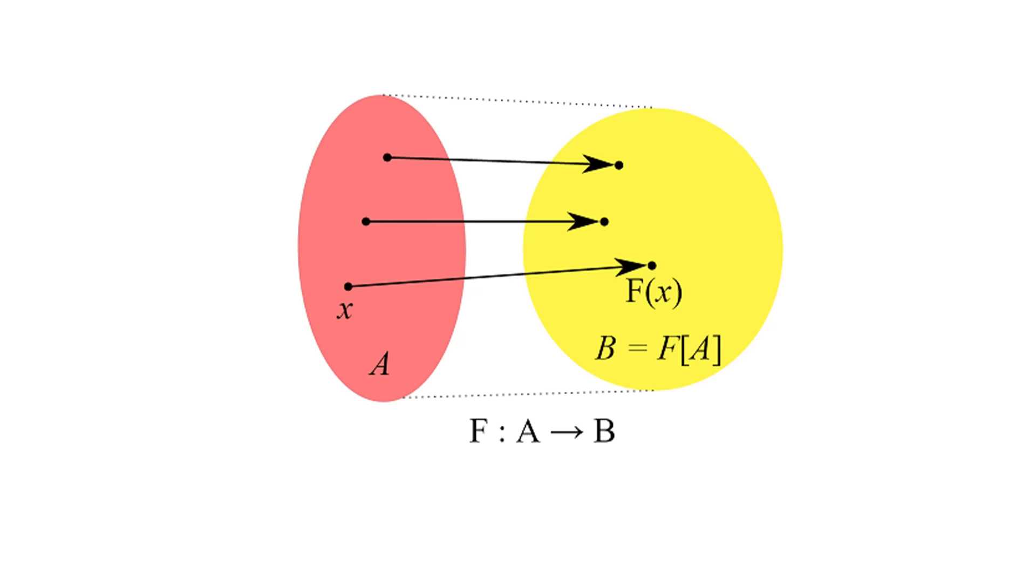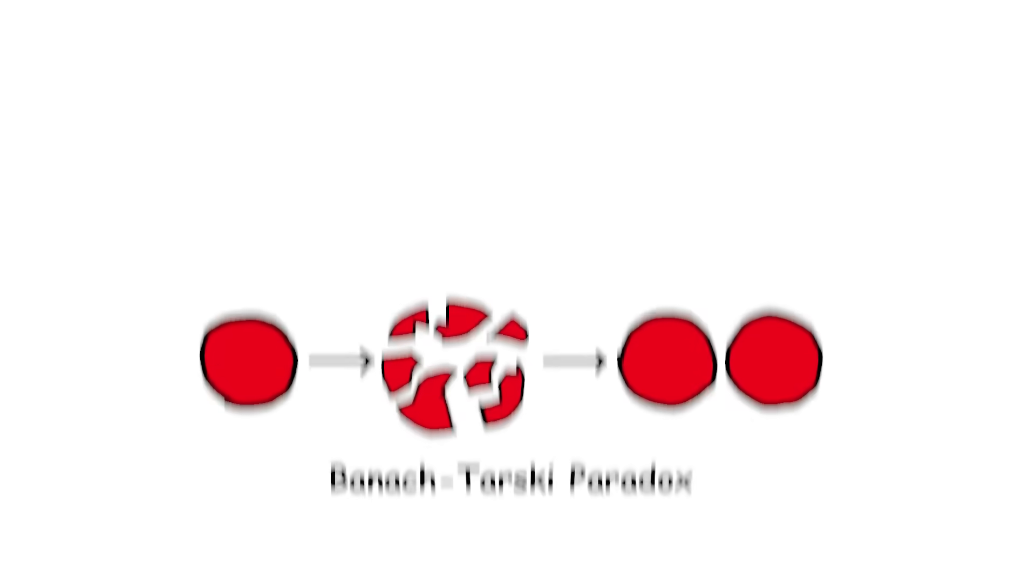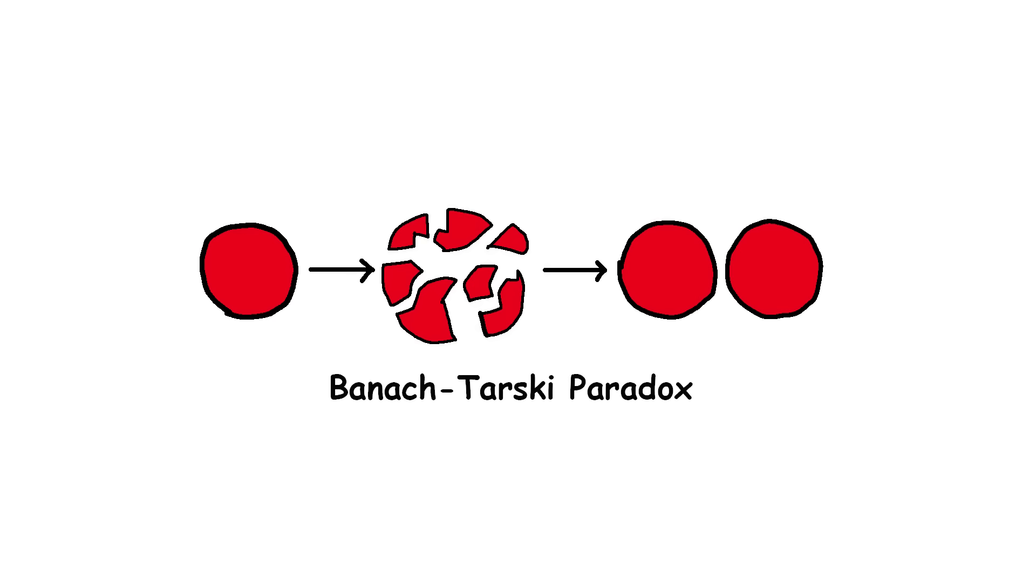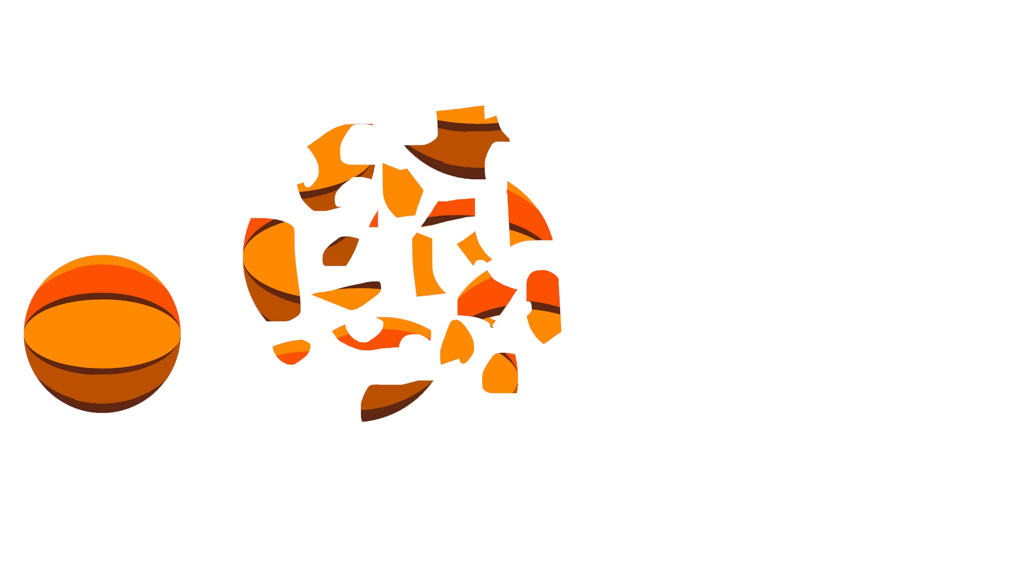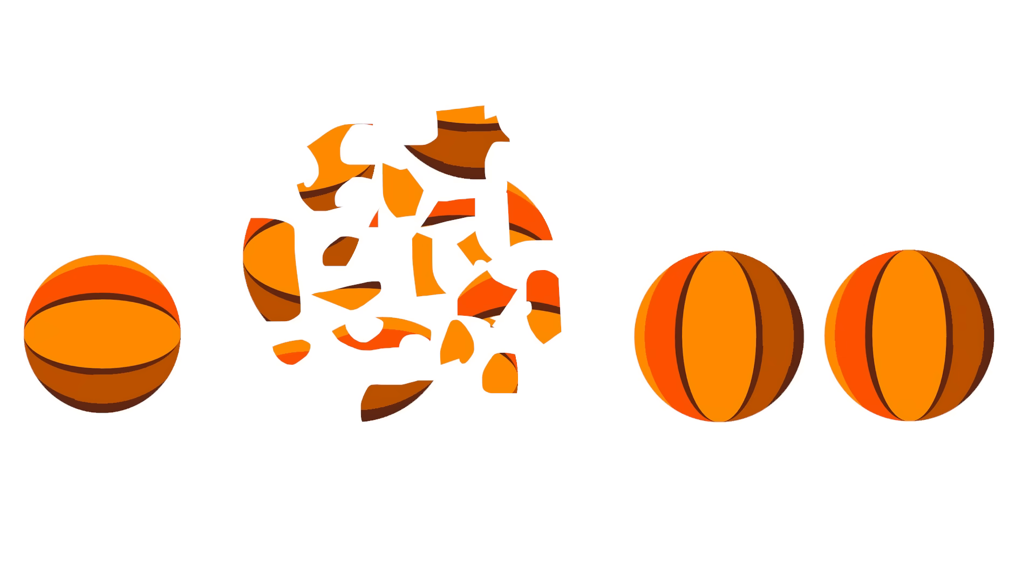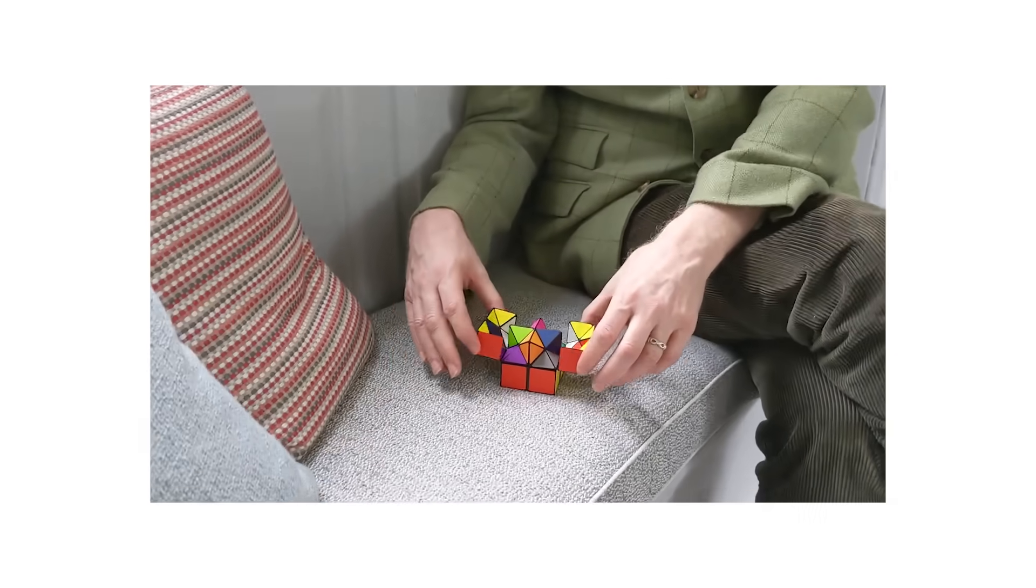Banach-Tarski Paradox. The Banach-Tarski Paradox is a mind-bending concept in geometry. It basically says you can take a solid ball, chop it into a few pieces, then rearrange them into two identical solid balls, without stretching, bending, or adding anything. Sounds crazy, right?